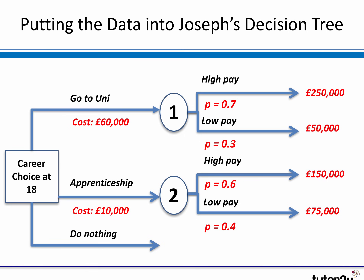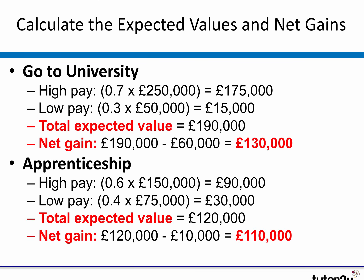For the apprenticeship: 0.6 times £150,000 is £90,000, and 0.4 times £75,000 is £30,000. Add them together for a total expected value of £120,000, then take off the £10,000 cost — a net gain of £110,000. Which is the best decision? The figures suggest university is a better option, but the smart student will point out the two numbers are very close, making it hard to distinguish between them. It all comes down to the assumptions about high and low pay and probabilities — slightly different assumptions could easily make the apprenticeship come out higher.